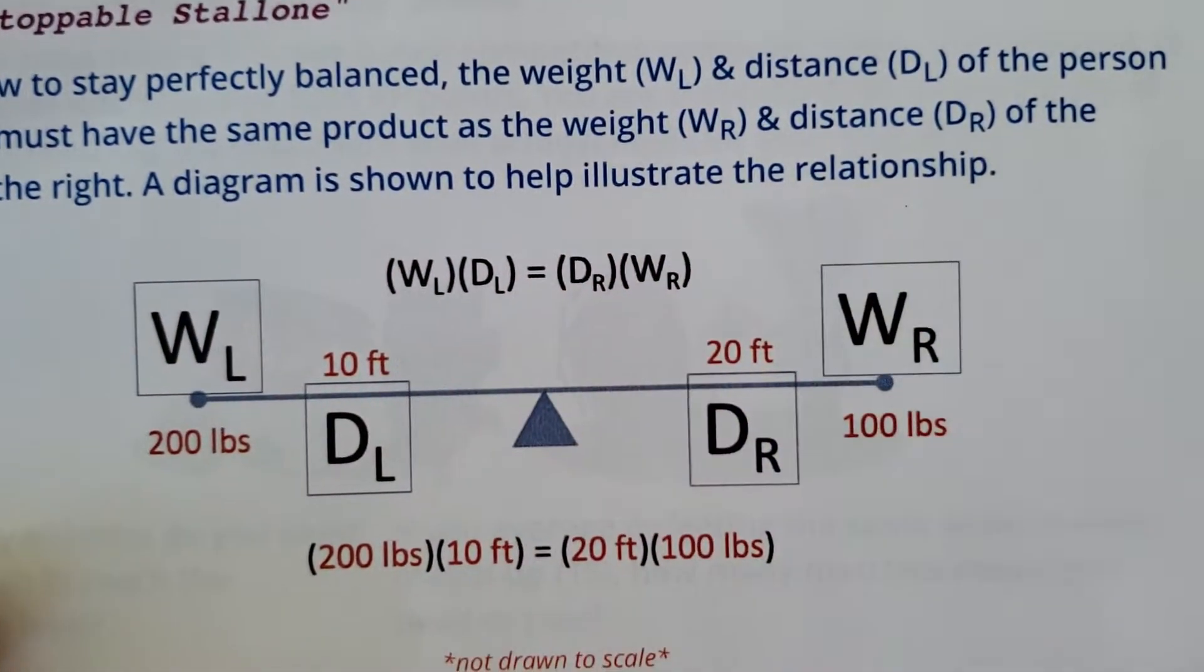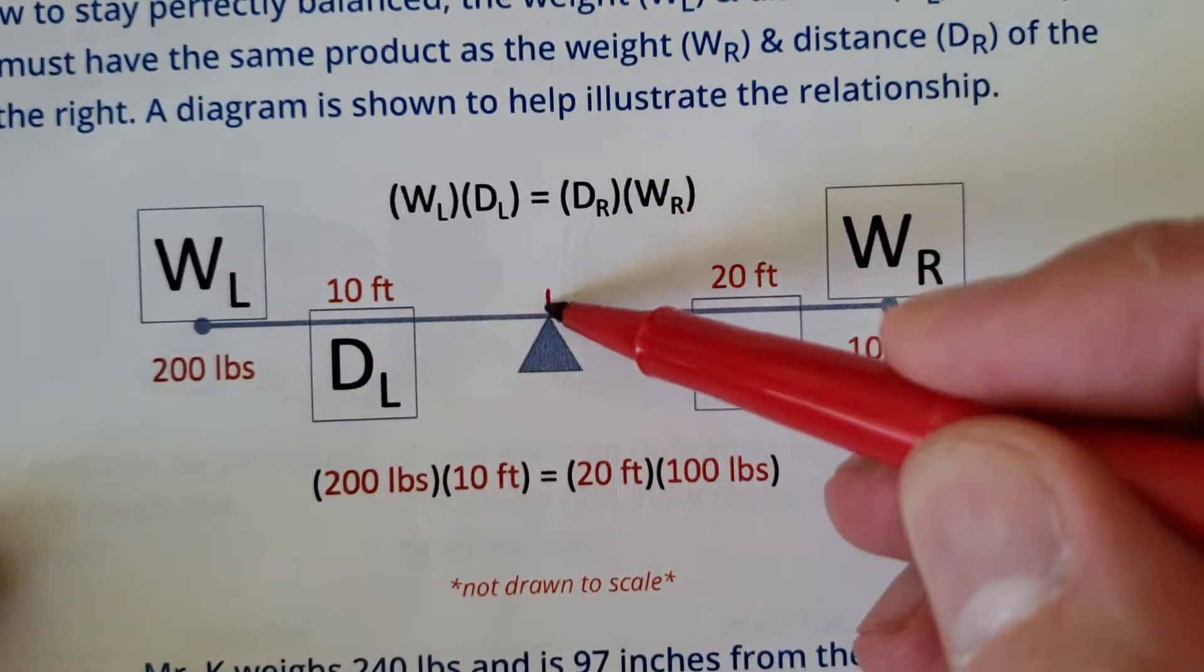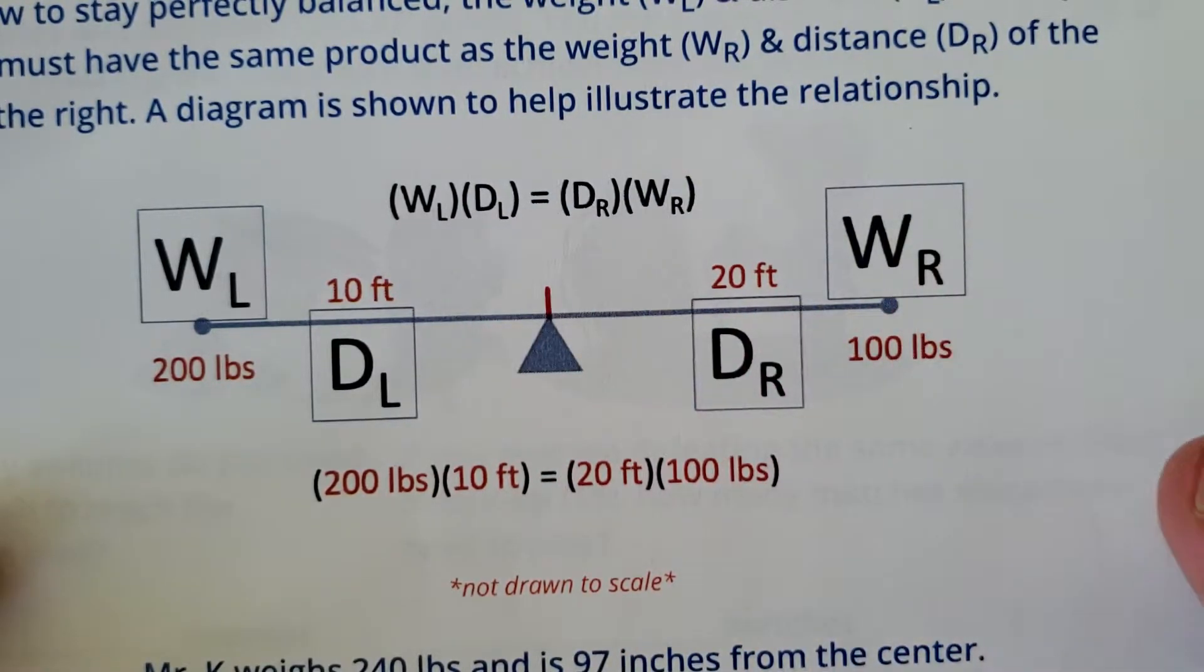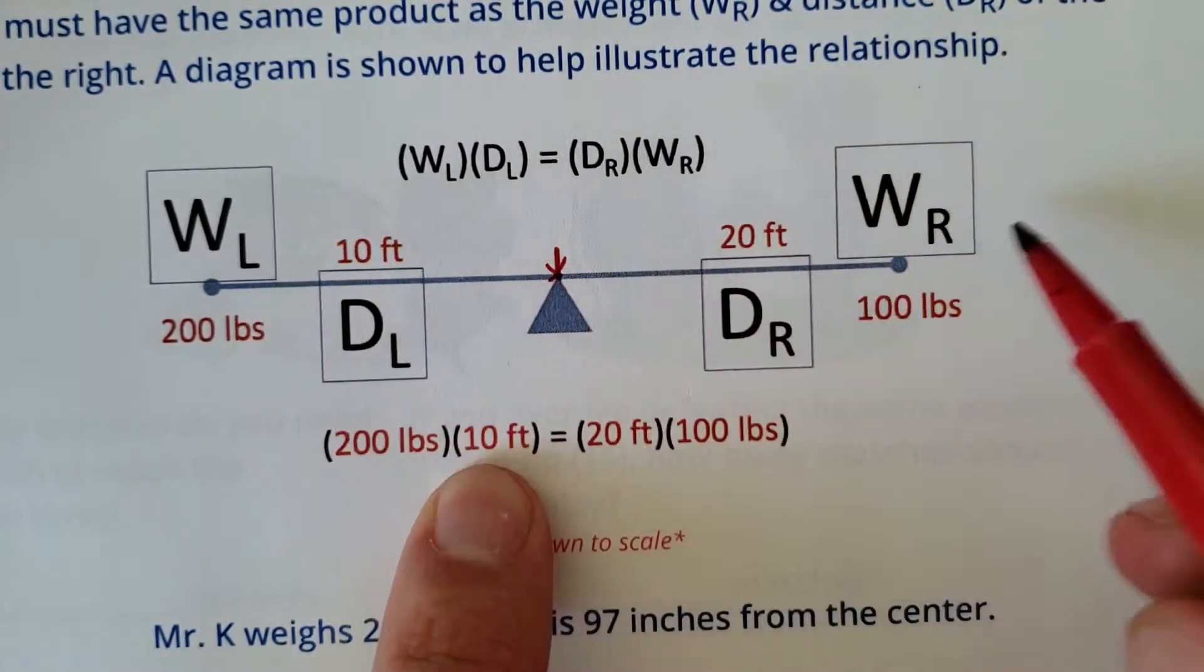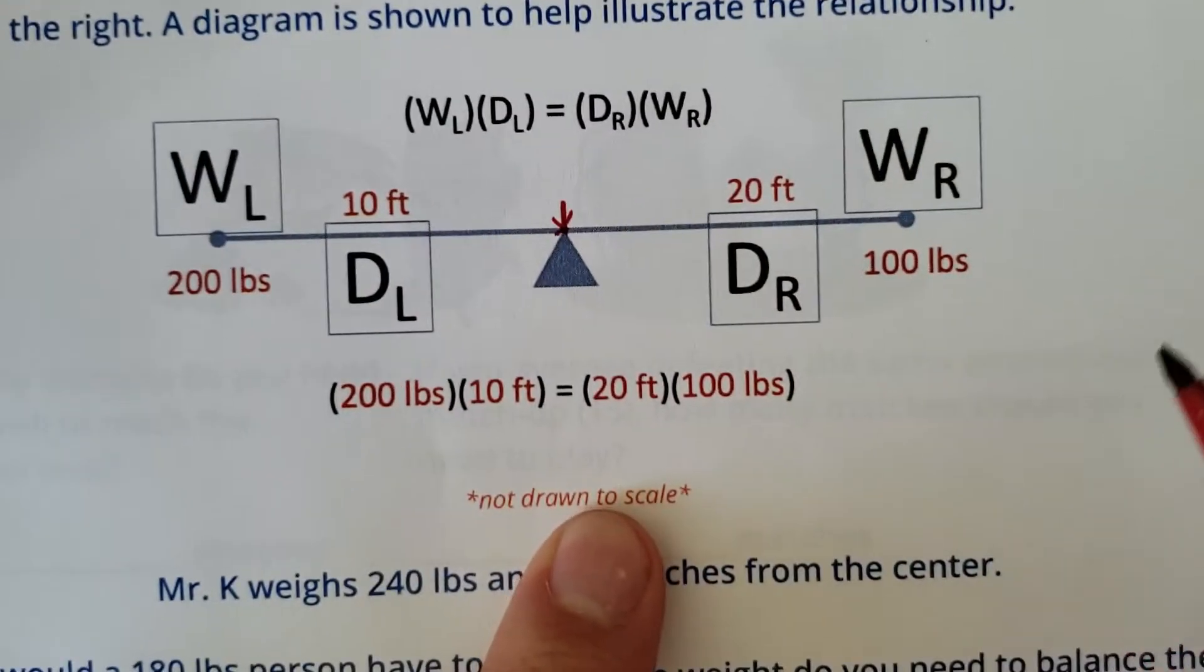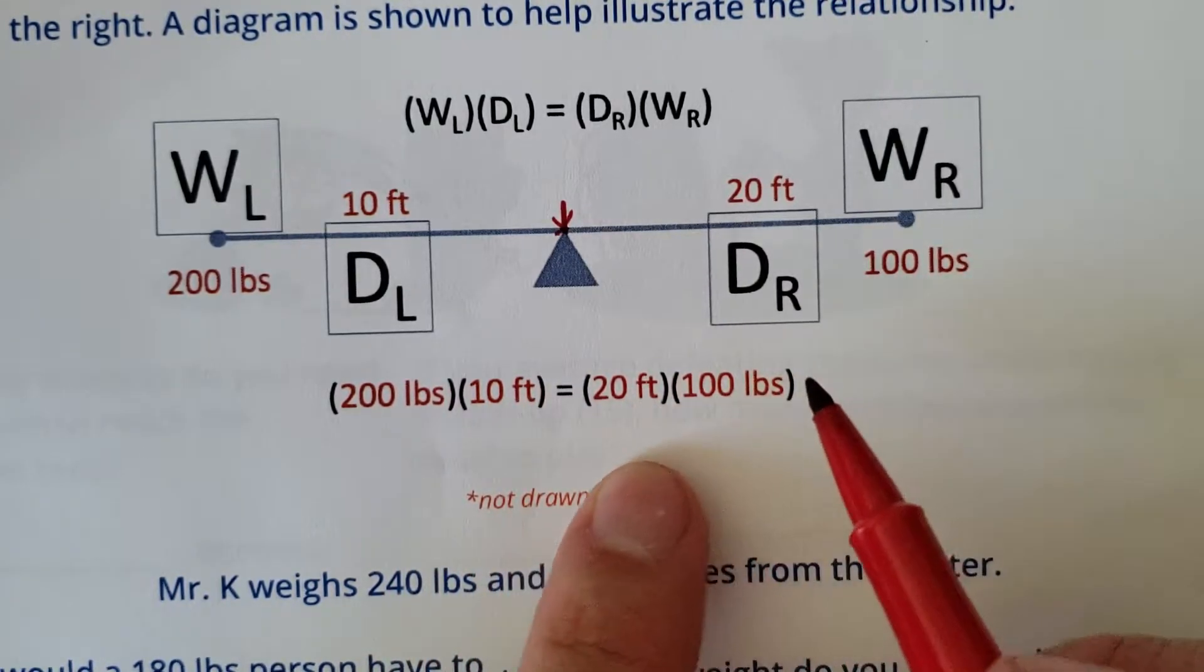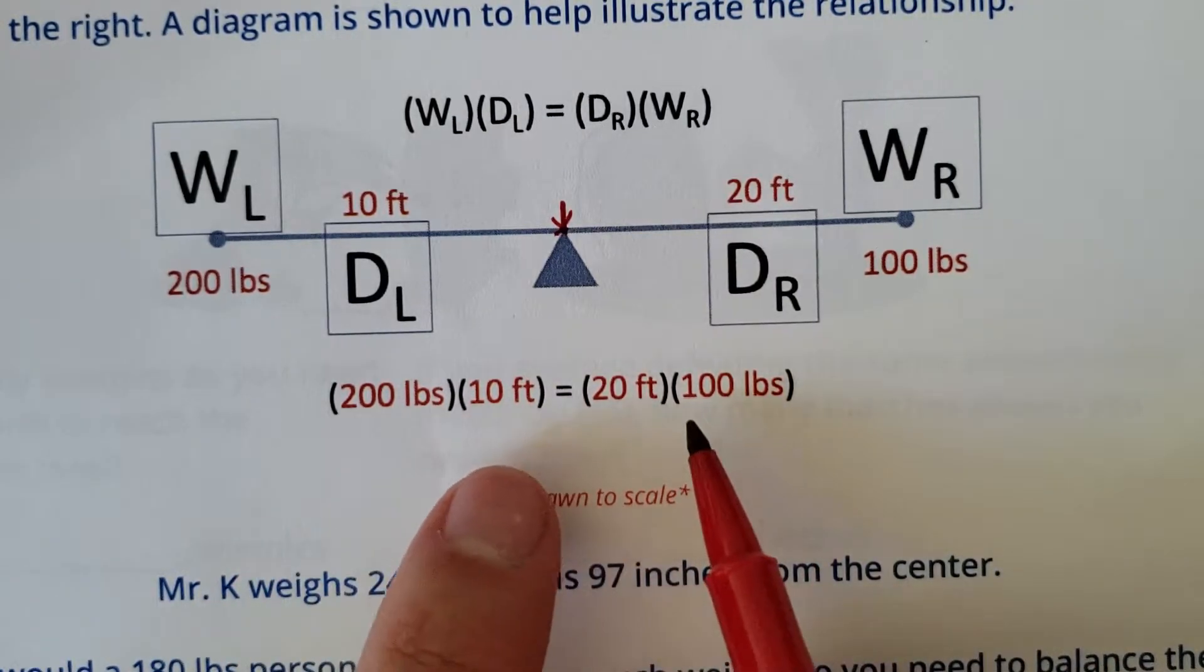A diagram is shown to help illustrate this relationship. So the weight and distance of the person on the left from the center needs to equal, when you multiply it, the weight and the distance of the person on the right multiplied. So a 200-pound person 10 feet from the center, again it's not to scale, like drawn to scale - we're talking about a scale and it's not drawn to scale, how dare I - a 200-pound person 10 feet away should balance with a 20-foot away 100-pound person. Why? Because when you multiply that, you get 2,000. 2,000 equals 2,000, all right?